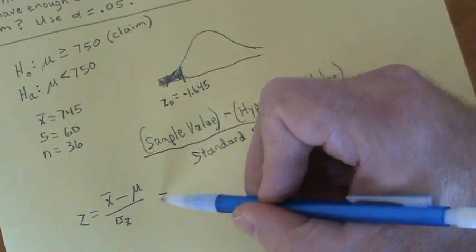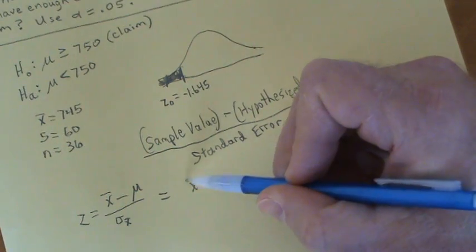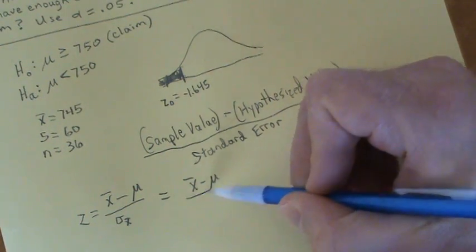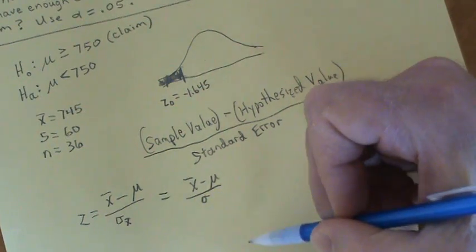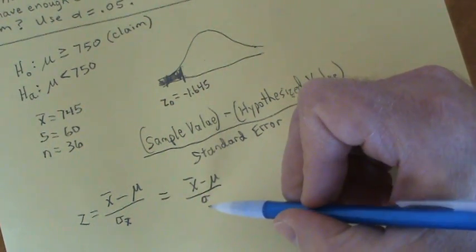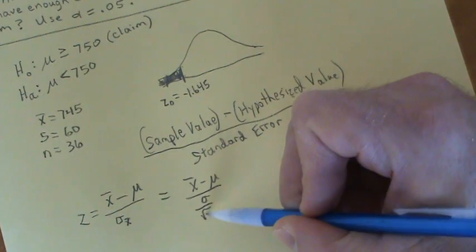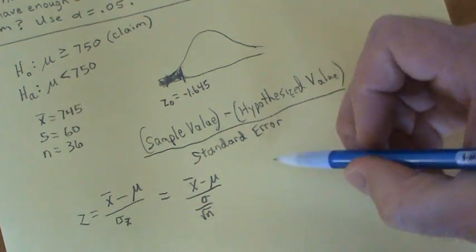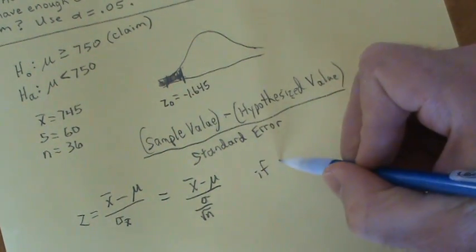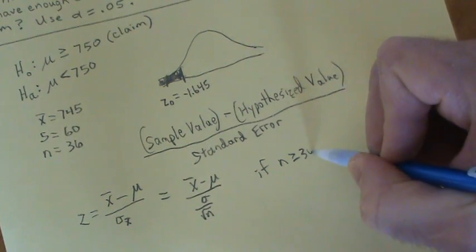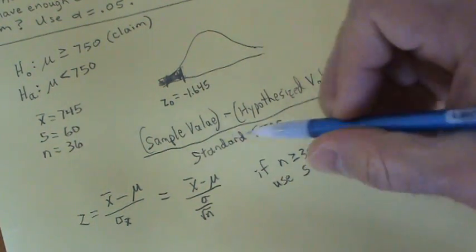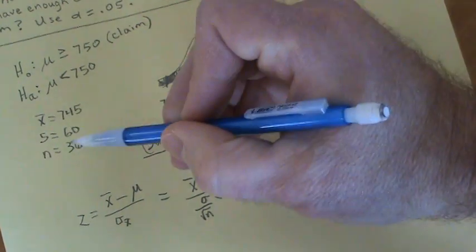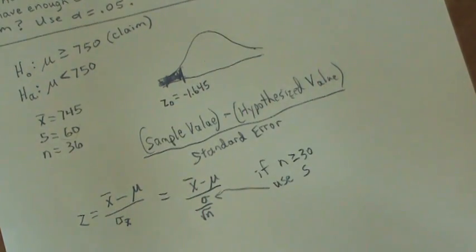But σ sub x̄, the standard error, is simply this population standard deviation σ divided by the square root of your sample size n. And if n happens to be greater than or equal to 30, the standard rule usually is you can use s in place of σ, because we don't know what σ is, but we do know what s is. S is 60 in this case.